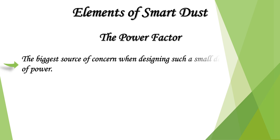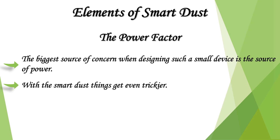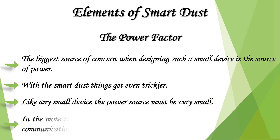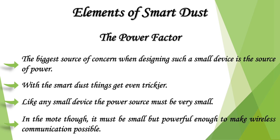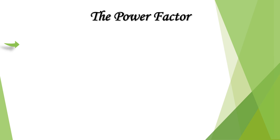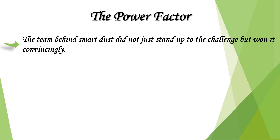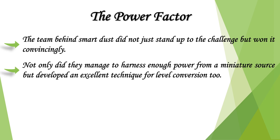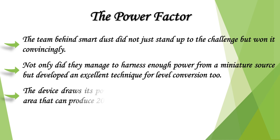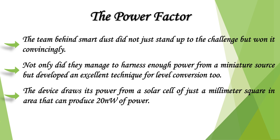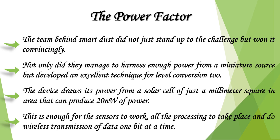The biggest source of concern when designing such a small device is the source of power. With smart dust, things get even trickier — like any small device, the power source must be very small, but powerful enough to make wireless communication possible. The team behind smart dust not only managed to harness enough power from a miniature source but also developed an excellent technique for level conversion. The device draws its power from a solar cell of just one square millimeter in area, which can produce 20 nanowatts of power — enough for the sensors to work, all processing to take place, and wireless transmission of data one bit at a time.